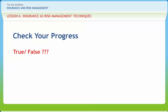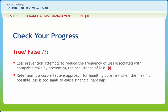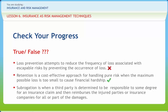Now let us check if we have understood the various concepts discussed in this lesson clearly. First: Loss prevention attempts to reduce the frequency of loss associated with escapable risk by preventing the occurrence of loss — right or wrong? Wrong. Second: Retention is a cost-effective approach for handling pure risk when the maximum possible loss is too small to cause financial hardship — right or wrong? Right. Third: Subrogation is when a third party is determined to be responsible to some degree for an insurance claim and then reimburses the injured parties or insurance companies for all or part of the damages — right or wrong? Right.